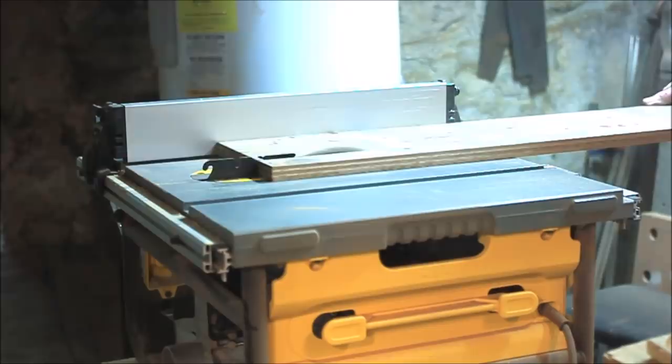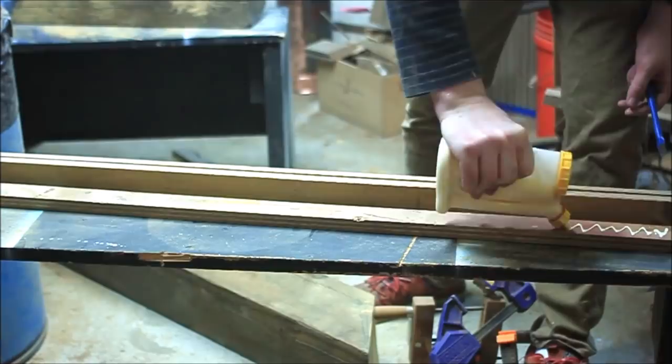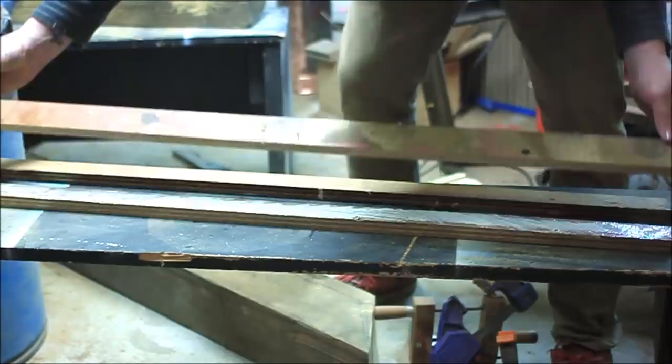This guitar is going to be what's called a through-neck design. That means instead of a truss rod keeping the neck stable on the inside, it's just going to have a neck piece that goes all the way down through the body. So I cut these long thin strips on the table saw and I'm going to laminate them together to achieve that goal.